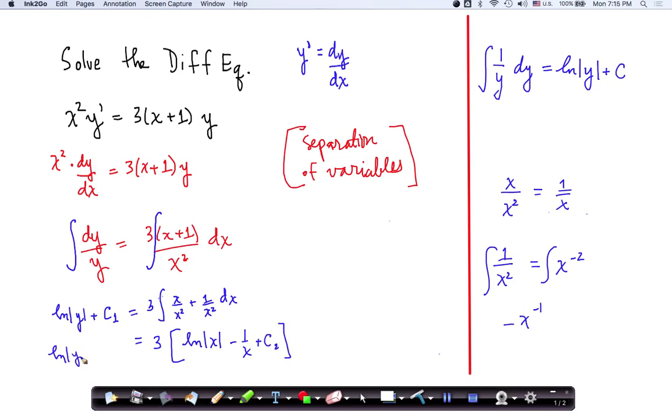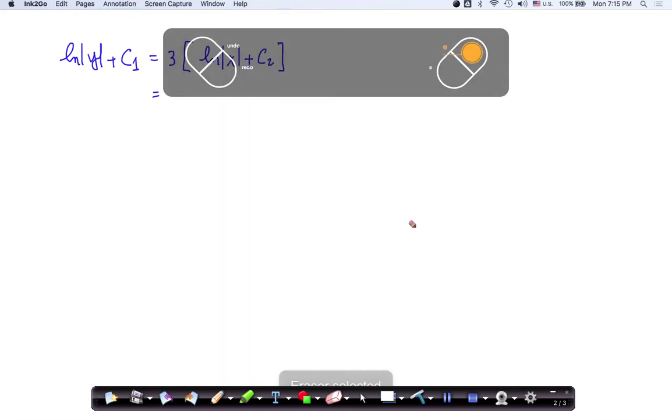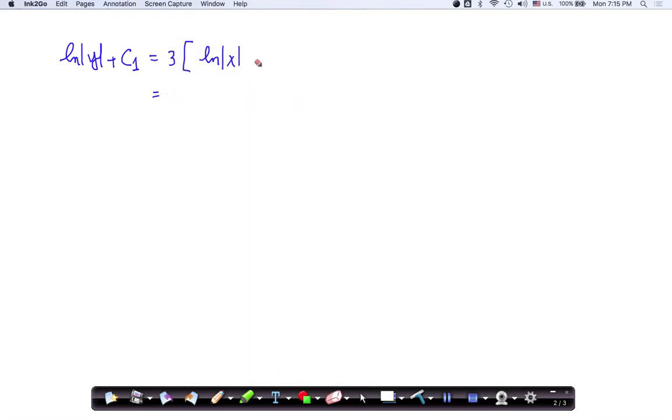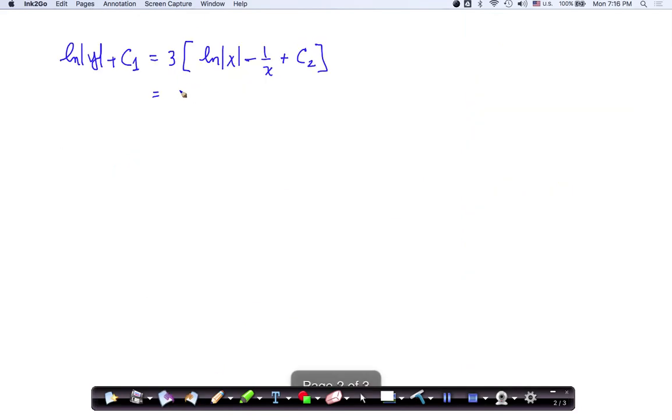Let me correct this real quick before I get too far off track. This is minus 1 over x plus some other constant. Let's just double check that. Natural log of x minus 1 over x plus some other constant. So distribute the three, I get three natural log of x minus 3 over x, plus, now three times a constant is still some sort of constant, so I don't have to worry too much about that.